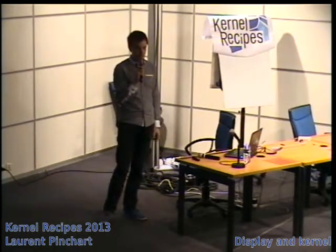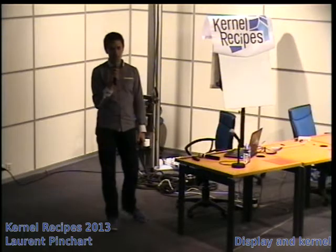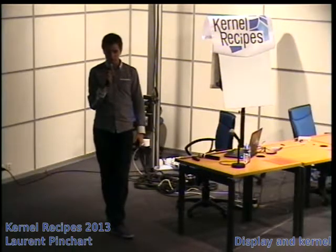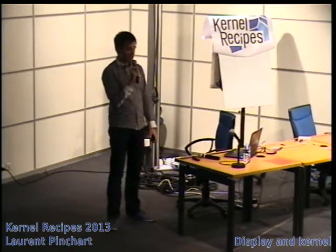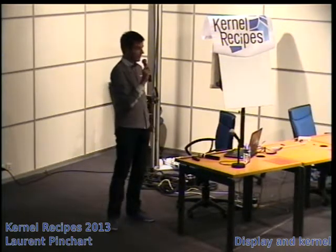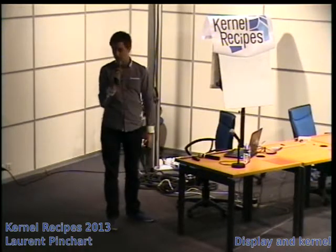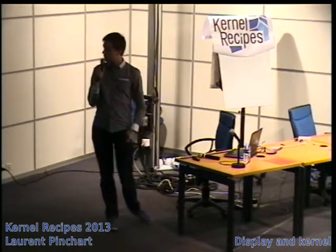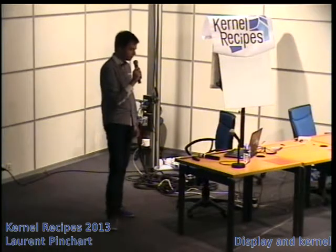Let me introduce the three APIs we have nowadays. The first one is called DRM. We have another API called FBDev, and the third one is called Video for Linux — V4L for short — with a '2' at the end because we're using version two of the API.